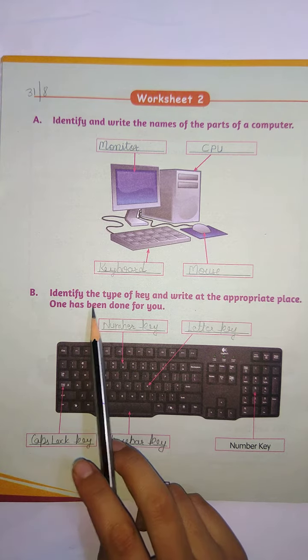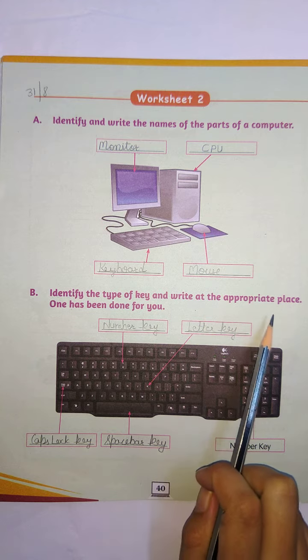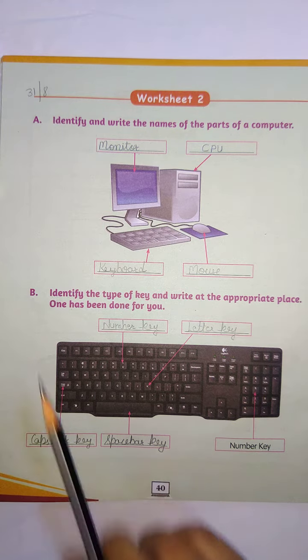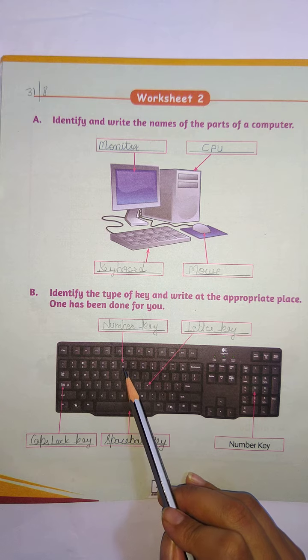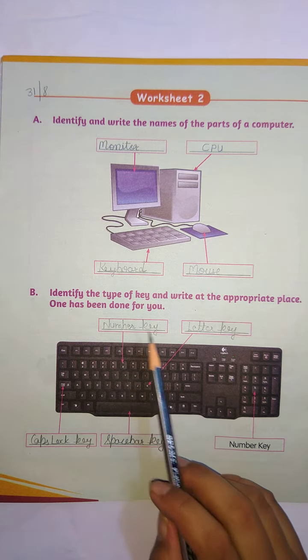Now question 2. Identify the type of key and write at the appropriate place. Now see, this is 6. So 6 is a number. So this is number key.